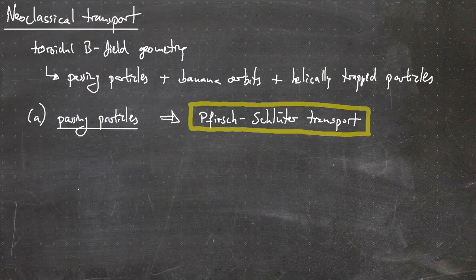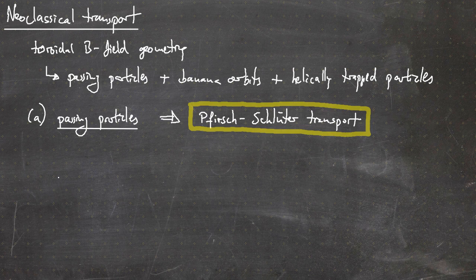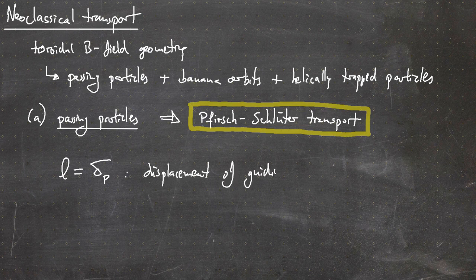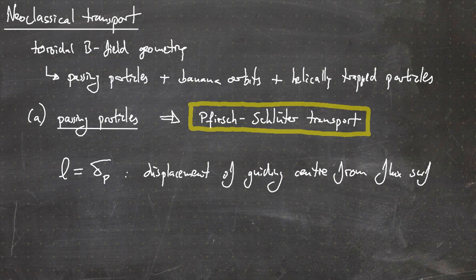As a reminder, having passing particles means that the particles do not stay locally on the flux surface — on average yes, but locally they can deviate from it. This displacement is what we will use as step size in the random walk approach, meaning we need a step size and a stepping time. As the step size L in the random walk approach, we will use delta_p, which is the displacement of the guiding center from the flux surface — these are the drift orbits.